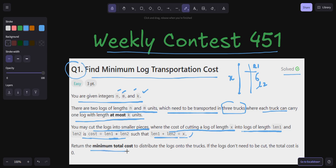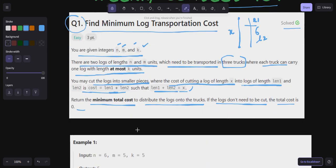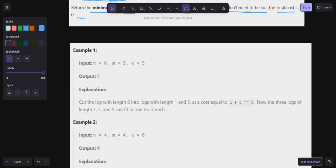We have to return the minimum total cost to distribute the logs onto the trucks. If the logs don't need to be cut, the total cost is zero. Very simple problem. Let's understand with example number one.